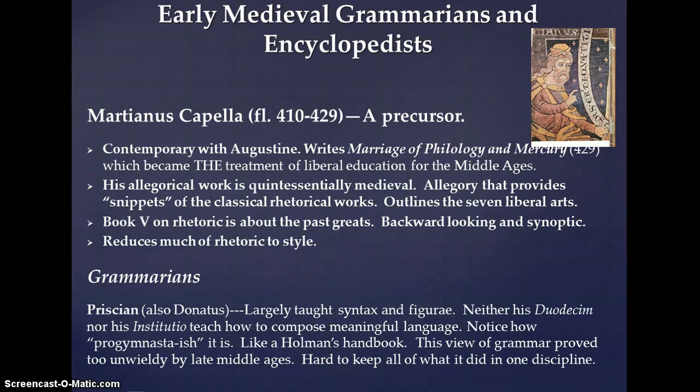Let's focus first on Marcianus Capella, who's roughly a contemporary of Augustine himself. We don't really know his birth and death dates, we just know when he was writing, about 410 to 429, but he was a precursor of these guys in several ways. He writes The Marriage of Philology and Mercury — that's our selection that we were looking at — which became the treatment of liberal education for the Middle Ages.